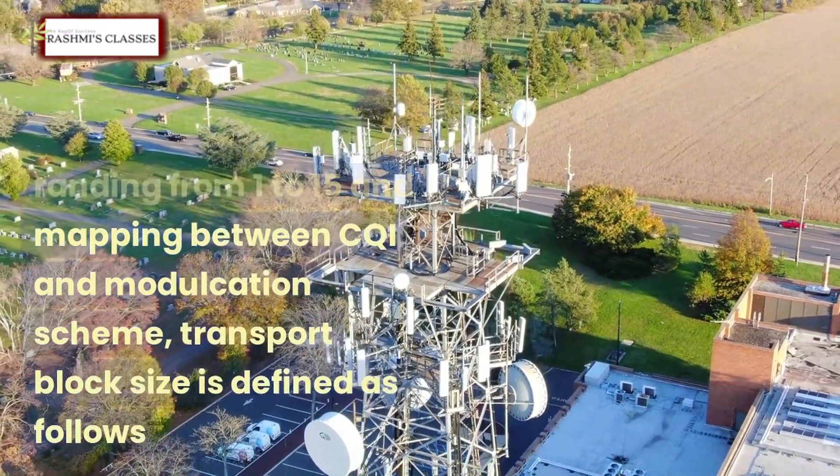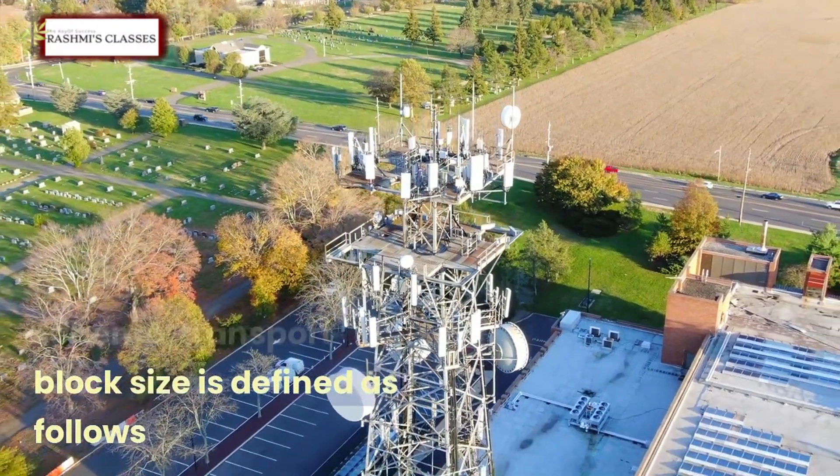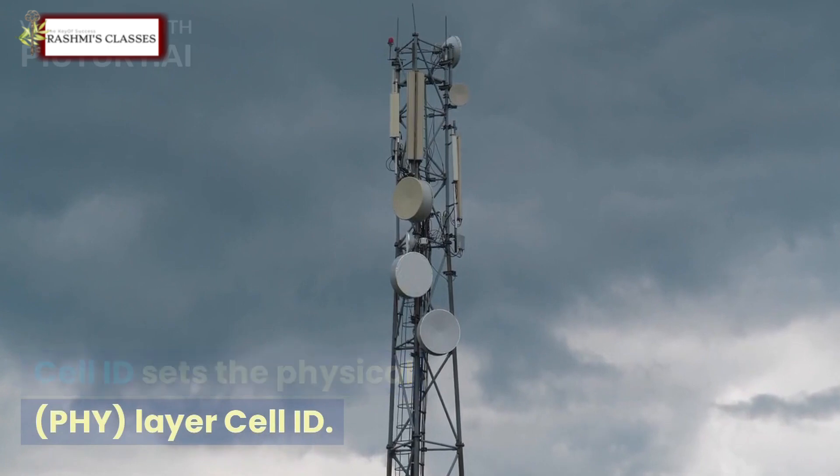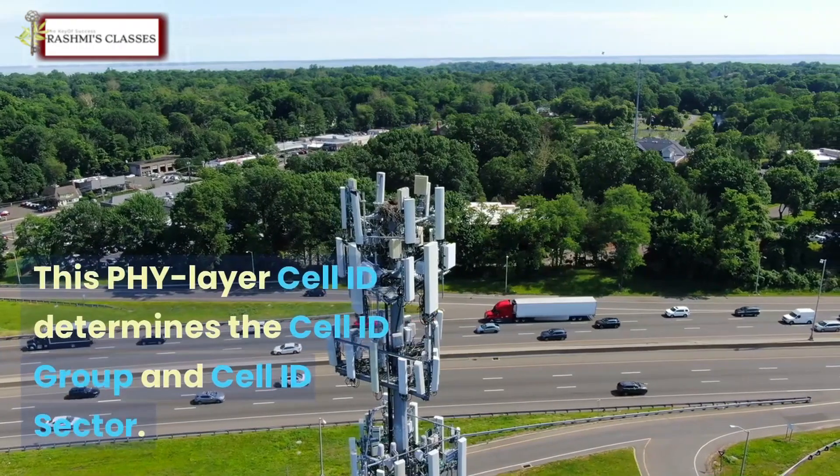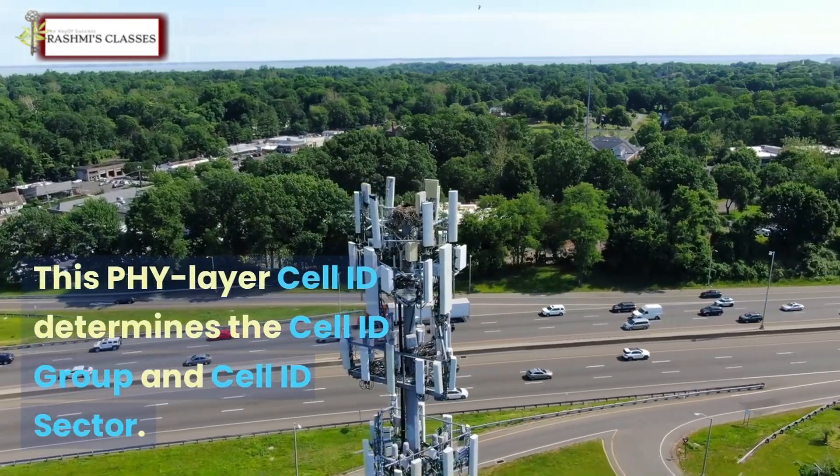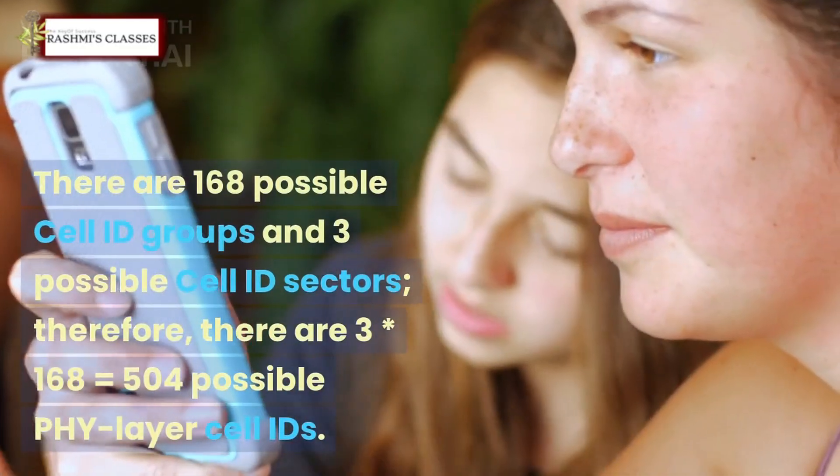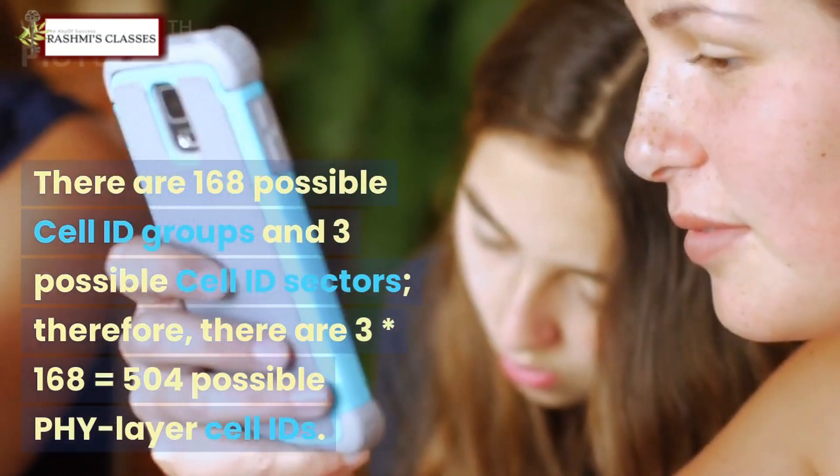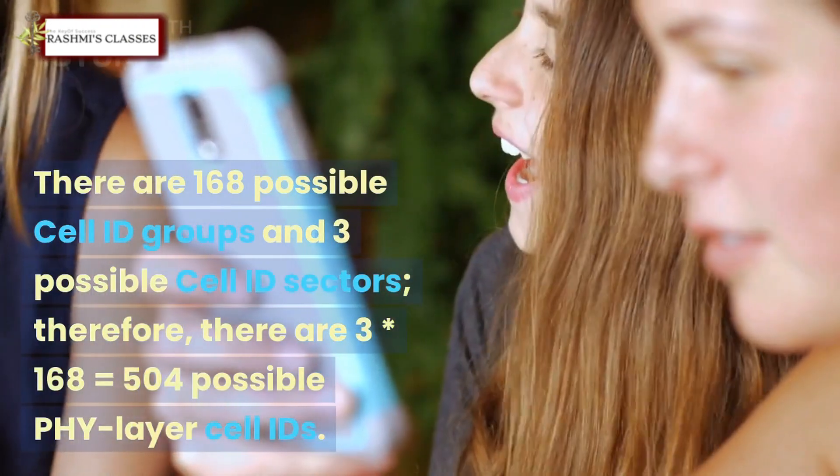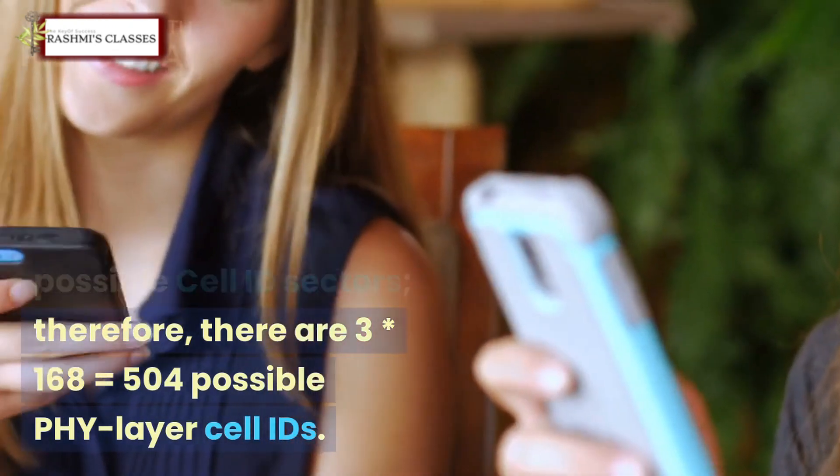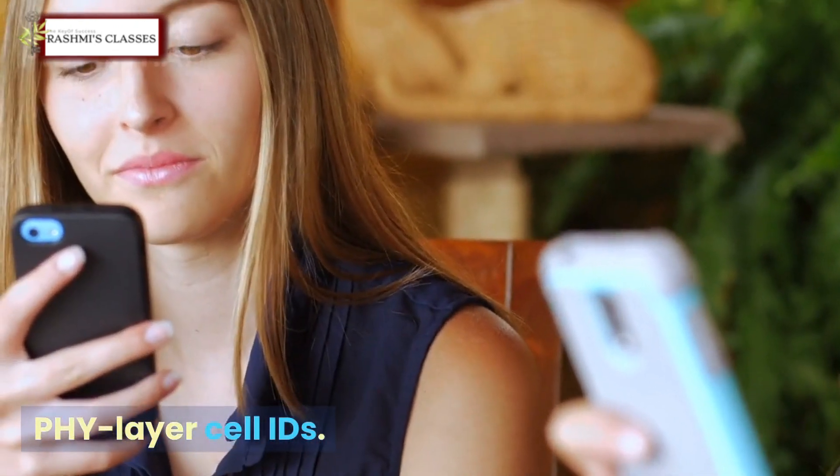6. PCI: Cell ID sets the physical layer cell ID. This physical layer cell ID determines the cell ID group and cell ID sector. There are 168 possible cell ID groups and three possible cell ID sectors, therefore there are 3*168 = 504 possible physical layer cell IDs.